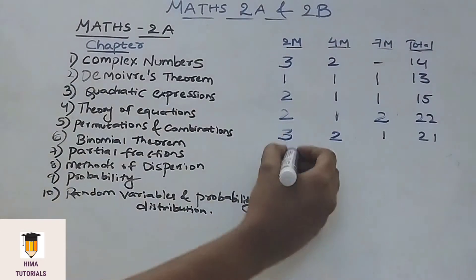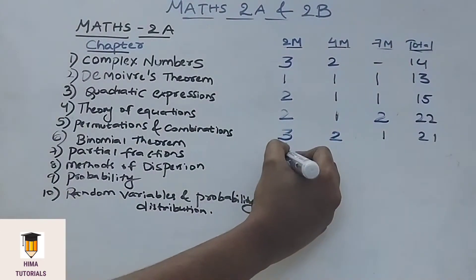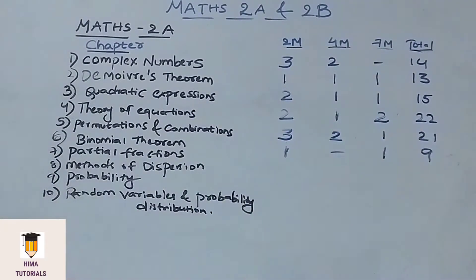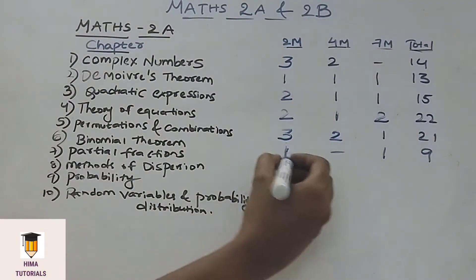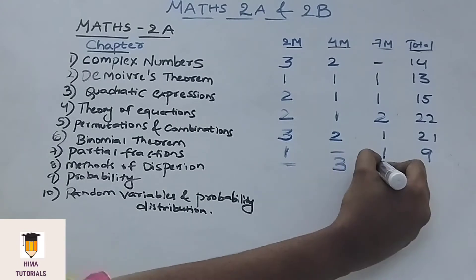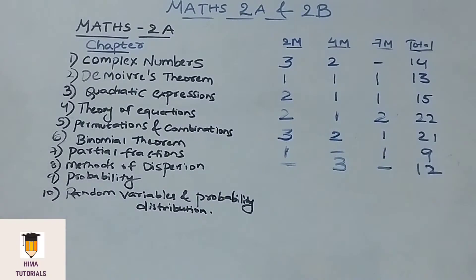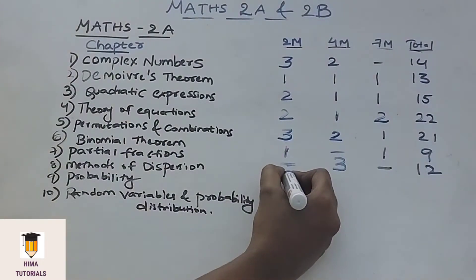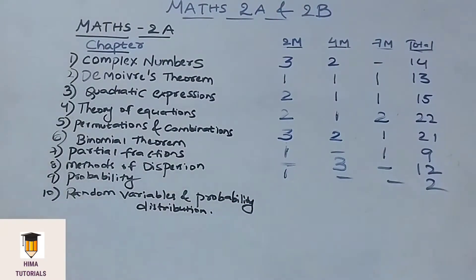In Binomial Theorem, we get 1 two-mark and 1 seven-mark question. Coming to the next chapter, Partial Fractions — in Partial Fractions, we get 3 four-mark questions. And in the Methods of Dispersion chapter, we get only 1 two-mark question.